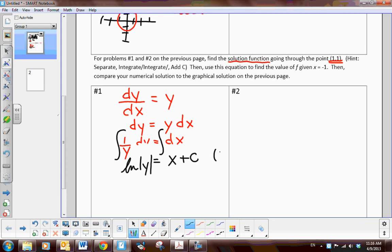Now I'm given a point, one, one. So I'm going to use that point to find the value of c. So the natural log of one is equal to one plus c. Well, what is the natural log of one? That means e to what power is one? Well, it's zero. So we know c has a value of negative one. So I can go back up and replace c with a negative one. So my function is the natural log of y equals x minus one.